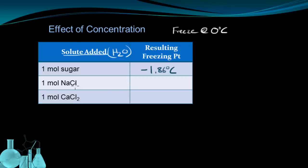If I add 1 mole of NaCl, I end up with a new freezing point of negative 3.72 degrees Celsius. And if I add 1 mole of CaCl2, I end up with negative 5.78 degrees Celsius.